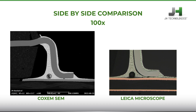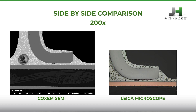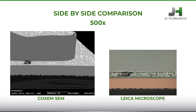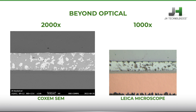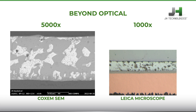SEM images are always monochrome. Here is the same sample at 200x on both systems. Once again, the same sample at 500x on both systems. Notice how much larger the field of view is with the SEM. The same sample at 1000x — notice the clarity of the grains in the SEM image. At 2000x, we have surpassed the capability of the microscope, and we can go even higher with the SEM, providing you even more details about your material.